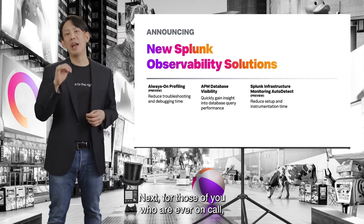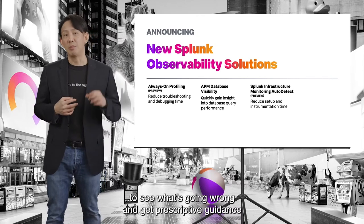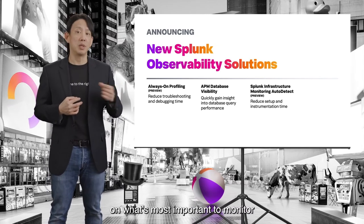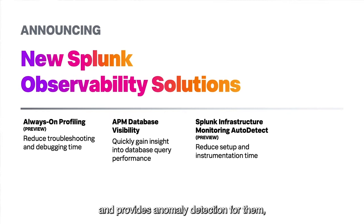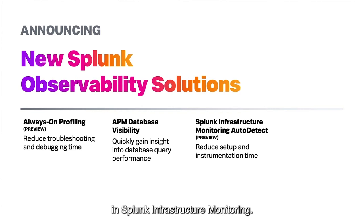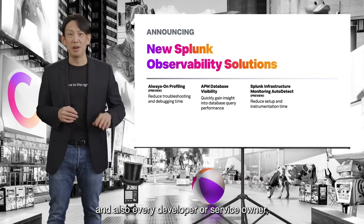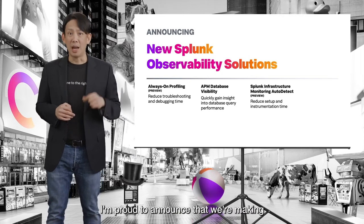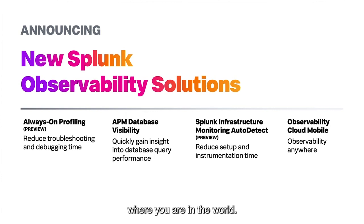Next, for those of you who are ever on call, we're improving on how quickly you're set up to see what's going wrong and get prescriptive guidance with Splunk Infrastructure Monitoring Auto Detect. Auto Detect automatically discovers popular services and provides anomaly detection for them, reducing the setup time for alerting in Splunk Infrastructure Monitoring. And I'm proud to announce that we're making Splunk Observability Cloud Mobile available, so you can be productive and responsive no matter where you are in the world.